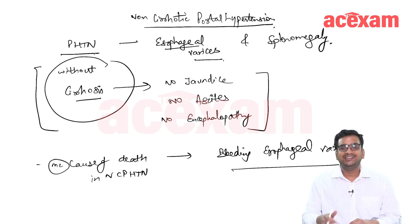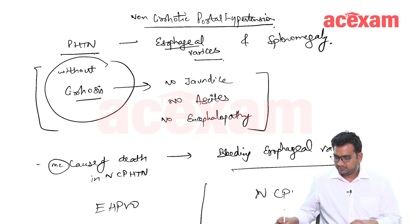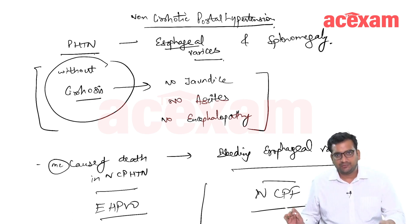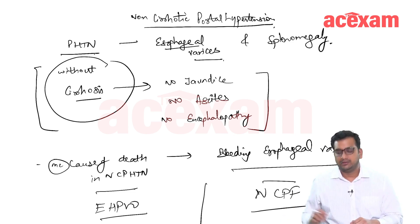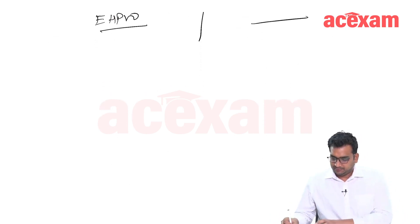There are two main diseases in non-cirrhotic portal hypertension: EHPVO and NCPF. EHPVO stands for extrahepatic portal venous obstruction, and NCPF stands for non-cirrhotic portal fibrosis. We will discuss EHPVO first, then NCPF.